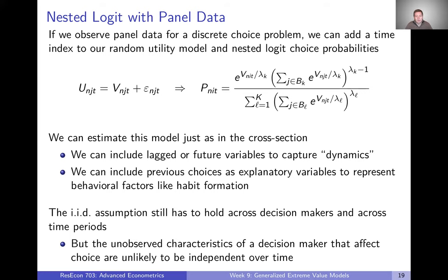And so we talked about this with the logit model. It's exactly the same here. We can estimate this model just as we did in the cross section. It's just that now we're going to have this pooled model where we think of every decision maker in each time period as its own observation. We can include things like lagged or future variables to capture dynamics here. So if what you do today depends on what you do yesterday, we can put yesterday's choice into today's model. We can also include previous choices as explanatory variables to represent things like habit formation.